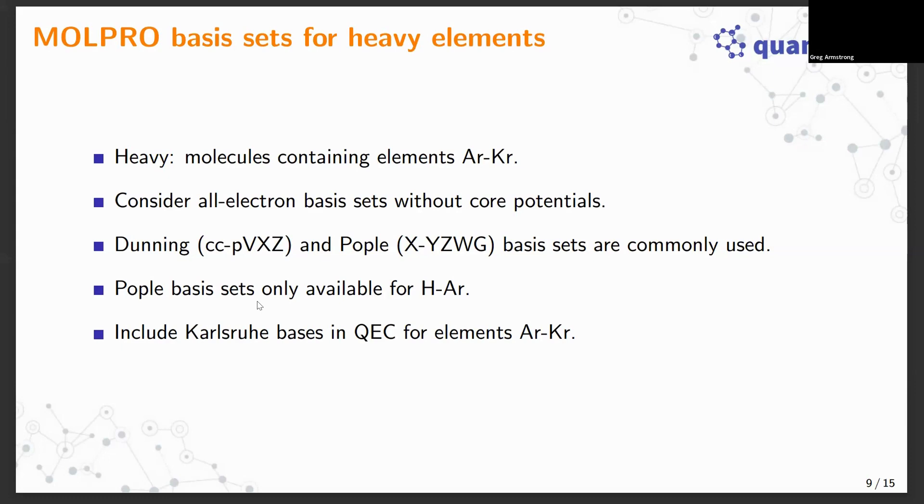The most common basis sets usually people use are the Dunning and Pople basis sets. The issue once you get beyond argon is the Pople basis sets are only available for hydrogen through argon, and in MOLPRO, Dunning sets are still available beyond argon but they're maybe your only choice. To my thinking it was good to include additional basis sets. The Karlsruhe basis sets are available for argon through krypton and my idea was to implement them in QEC as an alternative.